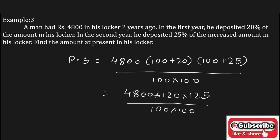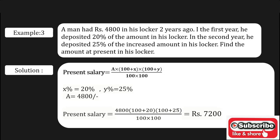See, the zeros get cancelled. After solving this, you will be getting the answer as rupees 7200. The present salary of a man in his locker is rupees 7200. In this way, you can solve the given problem.